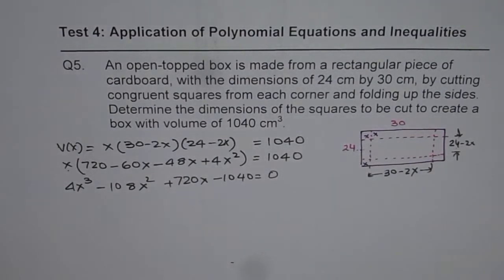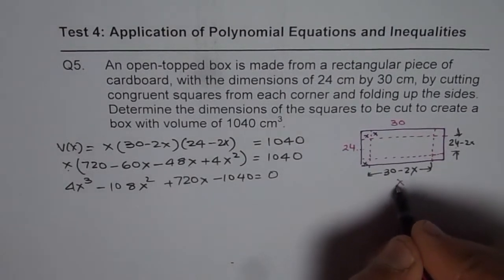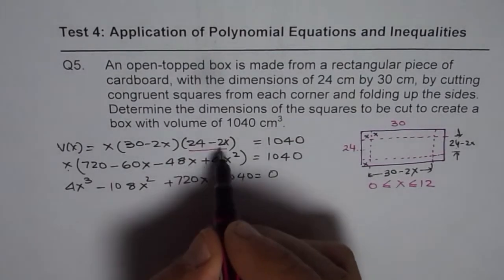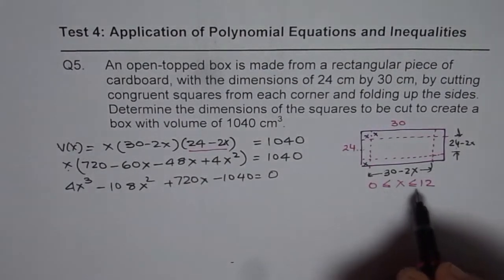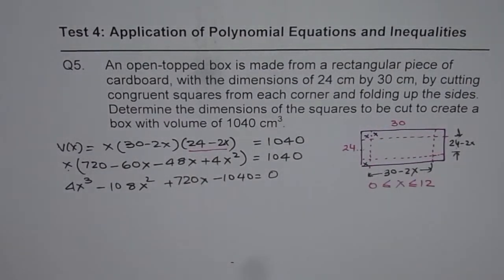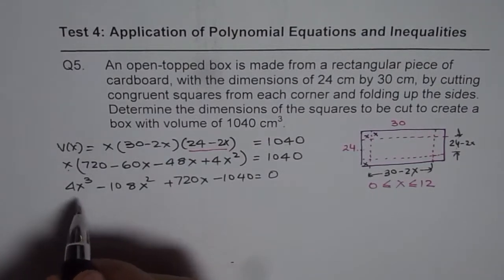Correct? So, we will write down our restriction that x has to be greater than or equal to 0 or less than or equal to 12. Note here, if I make x as more than 12, my width is going to be negative and we cannot have negative width. So, that is the restriction on the domain of x.